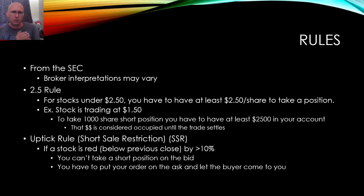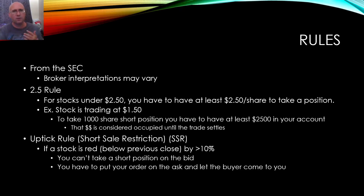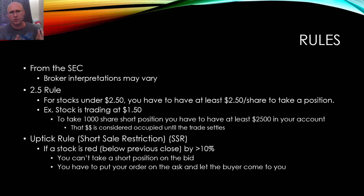The $2.50 rule: for stocks under $2.50, you have to have at least $2.50 per share to take a position. Even if a stock is trading at $1.50, if you want to take a 1,000-share short position you have to have at least $2,500 in your account — that's 1,000 times $2.50. That money is going to be held until the trade settles, so you couldn't hold two short positions at $1.50 with 1,000 shares each.